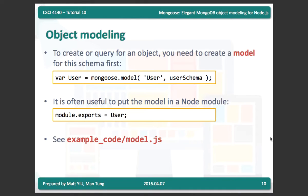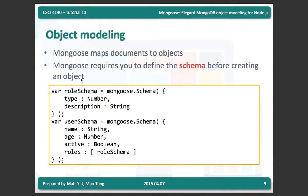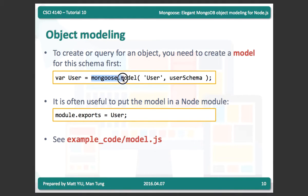After defining the schema, you cannot use it directly — you need to create a model for it first. The model sets up functions for interacting with the database, so when you access the database you always use the model; the schema is just the definition of the structure. To create a model, you use mongoose.model, pass the model name and the schema, and you get a model back.